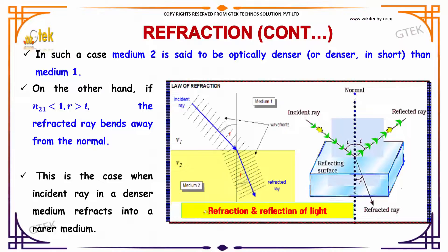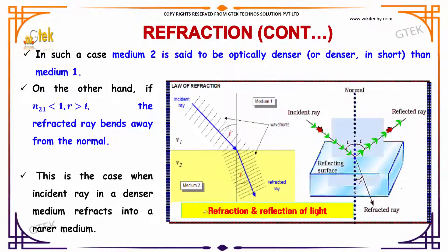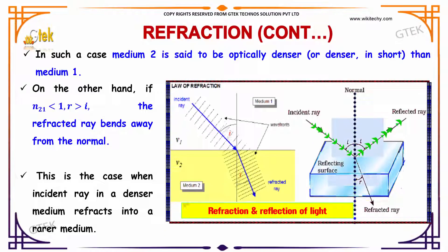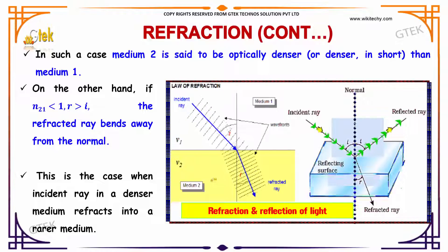In such a case, medium 2 is said to be optically denser than medium 1.